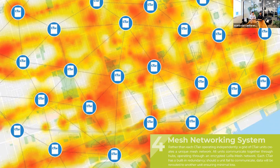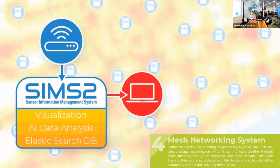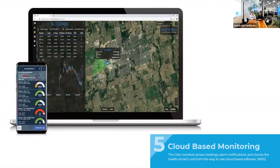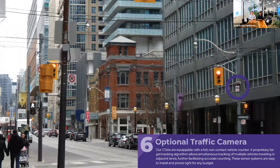All units send data to one main gateway, and through that gateway — either through cellular or WiFi — it passes information to our SIMS 2 server, which combines visualization, AI data analysis, and an Elasticsearch database used for quickly processing data. This is a cloud-based monitoring system and you can see a forward-facing view of how it looks. It's mobile-friendly and you can access it from anywhere in the world, remotely managing all these units as long as you have an internet connection.